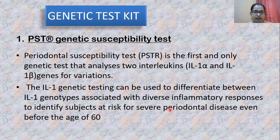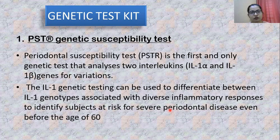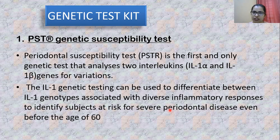Moving on to the genetic test kit — currently there is only one genetic test kit available for determining periodontal disease progression, the Periodontal Susceptibility Test. It works on detection of interleukin-1 and interleukin-1-beta genes, helps identify different genotypes of interleukin-1 — which is very much involved in periodontal disease progression — and is associated with diverse inflammatory responses to identify subjects at risk for severe periodontal disease even before the age of 60.